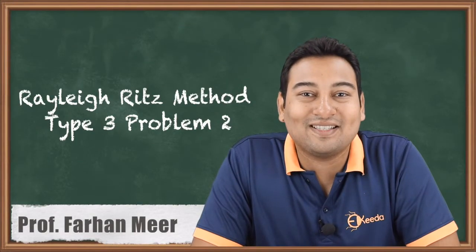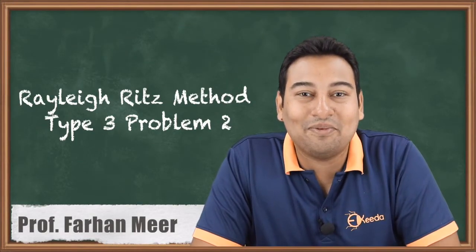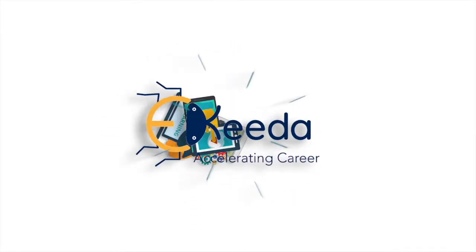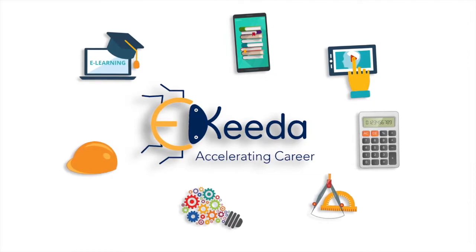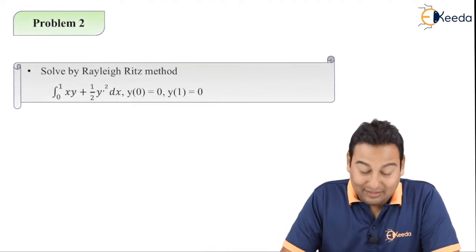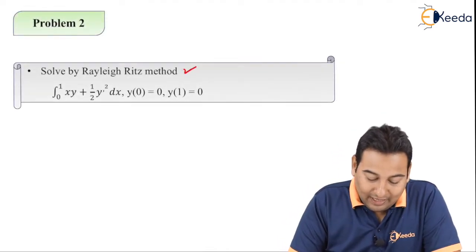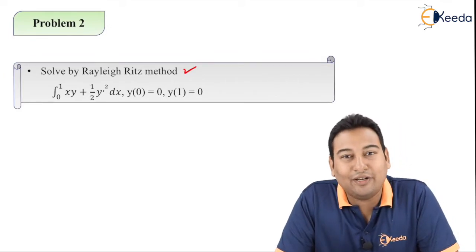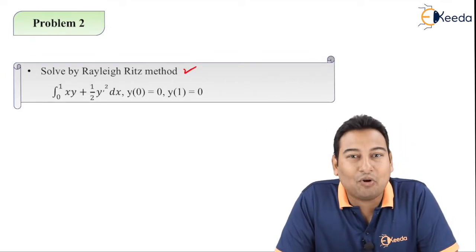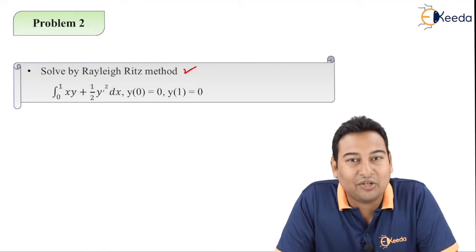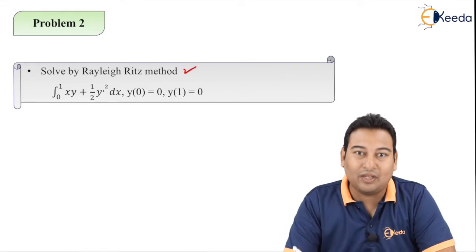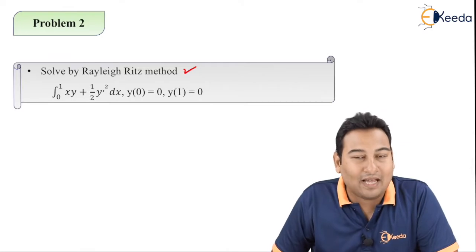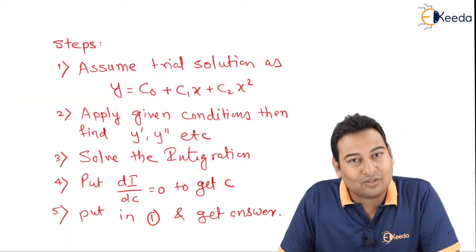Hello friends, in this video we'll be discussing Rayleigh-Ritz method Type 3, Problem 2. This is Problem 2 and we need to solve it by using the Rayleigh-Ritz method. We have already discussed one problem of the same type in the last video, and this is our second problem for this particular problem type.